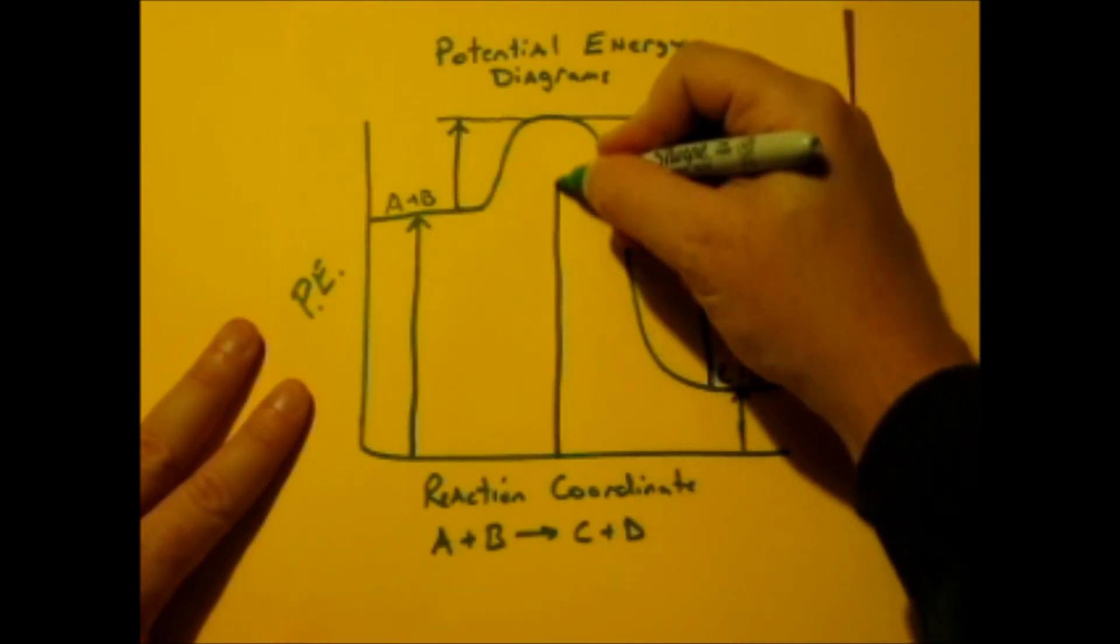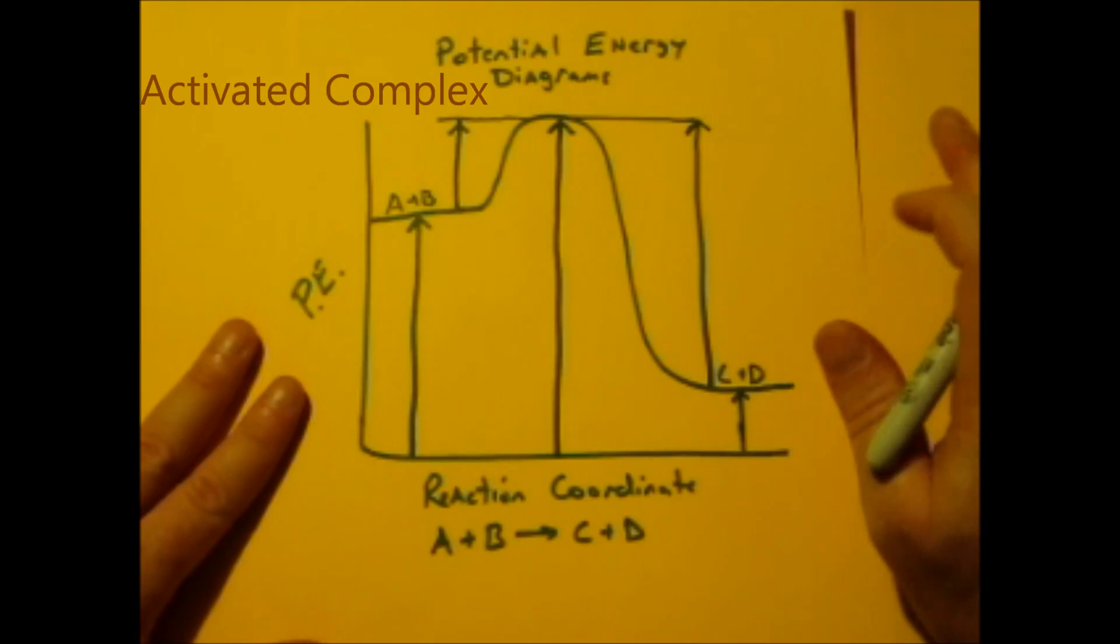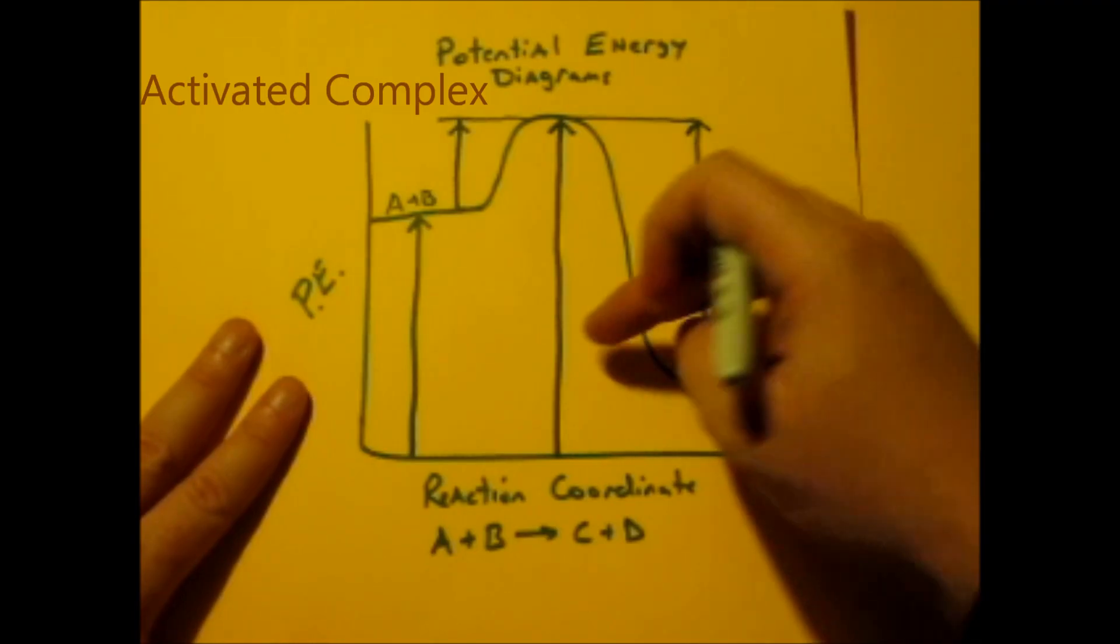This large arrow, the maximum energy, is what they call the activated complex. It's the largest vocabulary word you're going to have, and it's also the largest line.